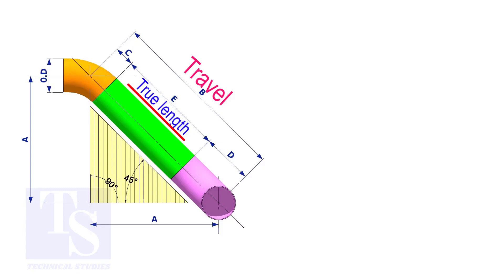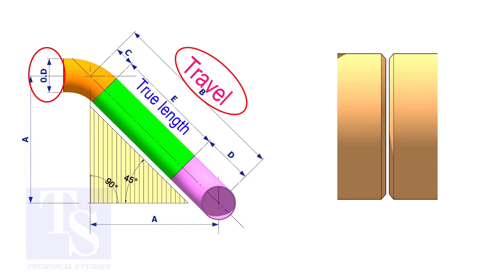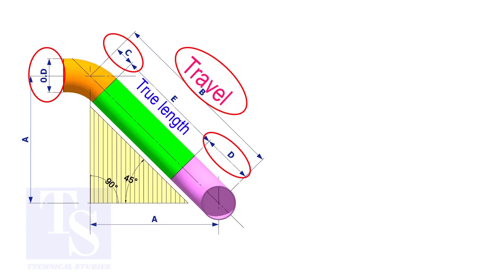To calculate the true length or the cut length, we need to know the travel length, the diameter of the pipe, the joint gap, and the elbow center. The elbow center is sometimes called takeoff length.